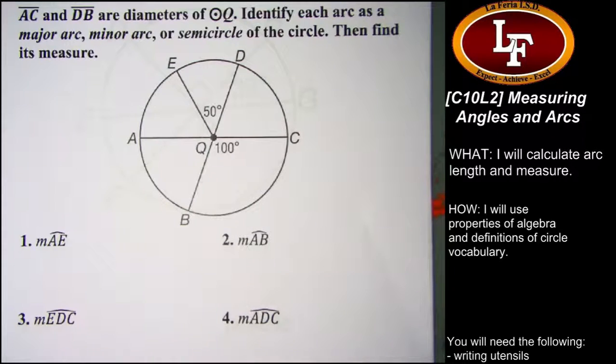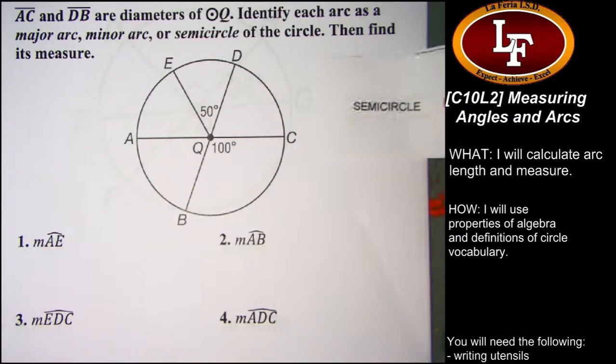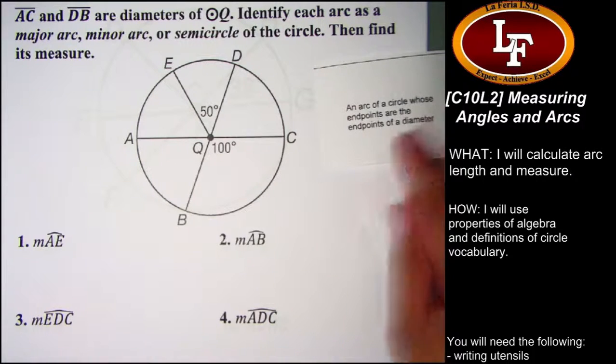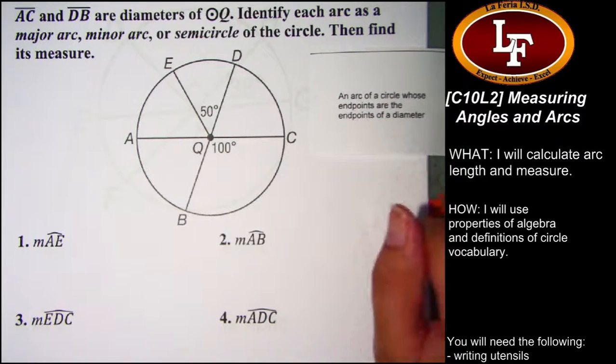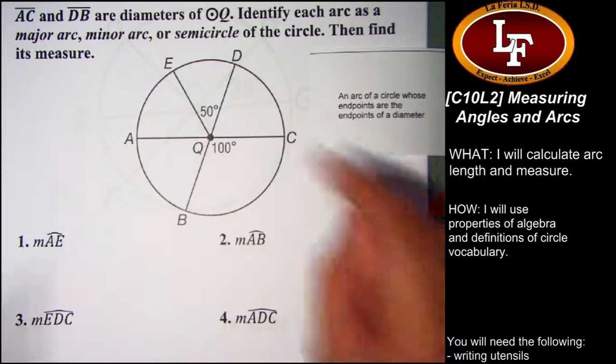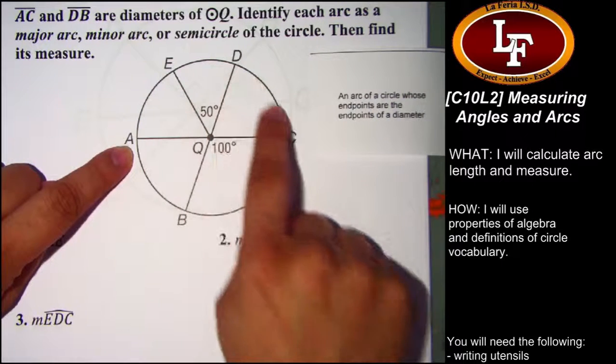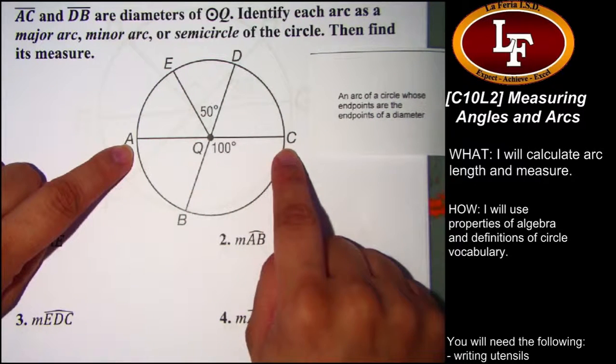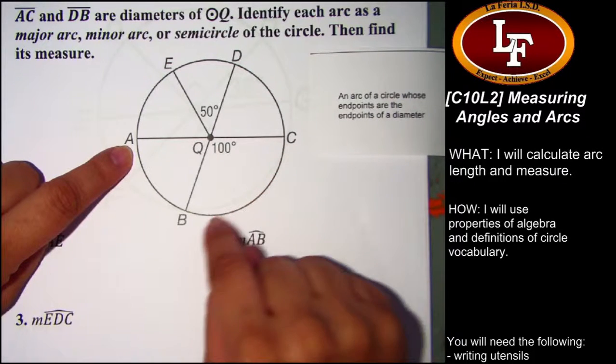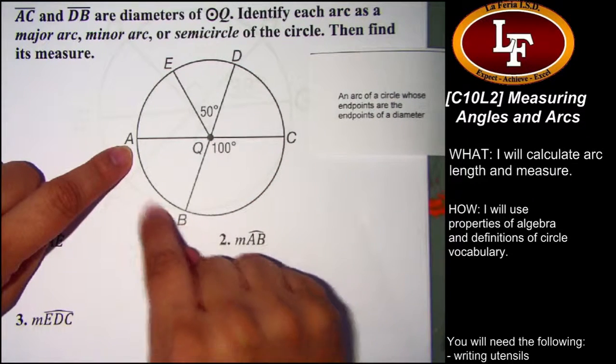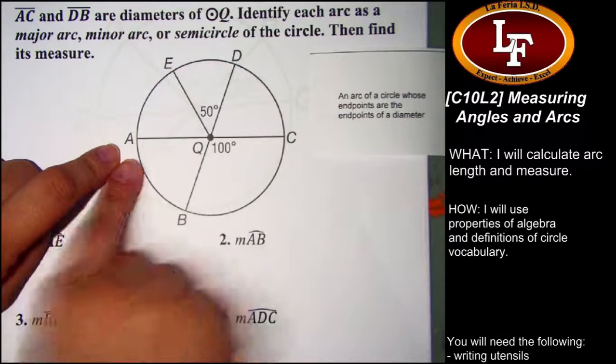We're going to take a moment to remind you of what these things are. Here's our vocabulary match game. A semicircle is the arc of a circle whose endpoints are the endpoints of a diameter. So this arc going from A through E and D to C would be a semicircle.